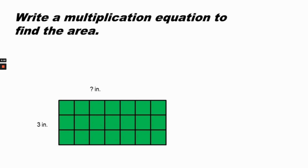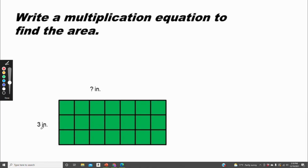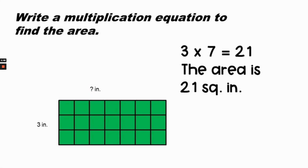Write a multiplication equation to find the area of this figure. The first factor is three because there are three rows. To find the other factor, count the squares along this side: one, two, three, four, five, six, seven — so the unknown number is seven. Three times seven equals twenty-one, and the area is twenty-one square inches.